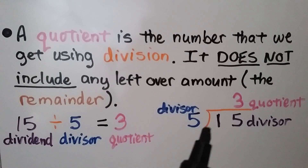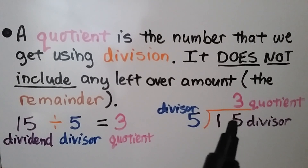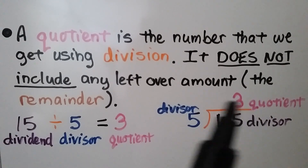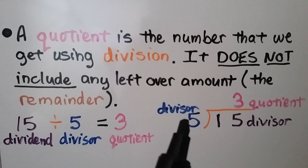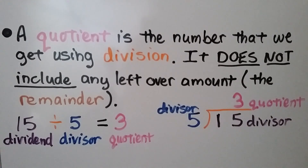We can also write it like this. 15 is our dividend. We're dividing the 15 by 5 — we're seeing how many 5s will fit into the 15. Our quotient is 3.